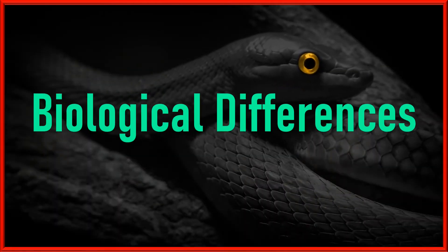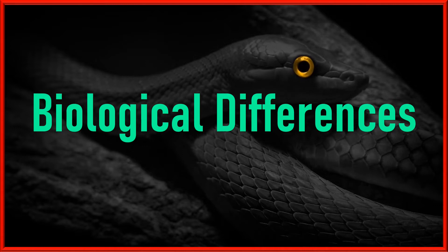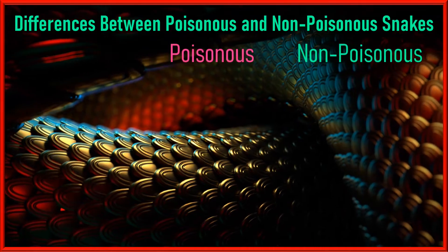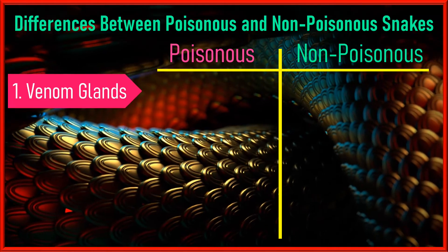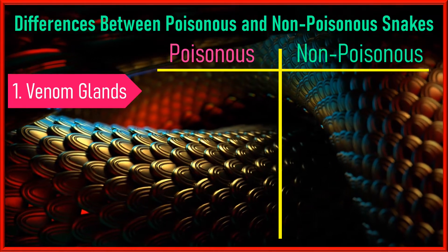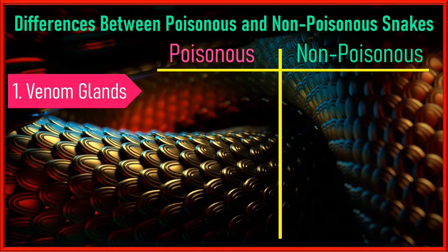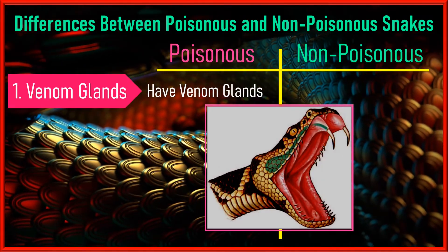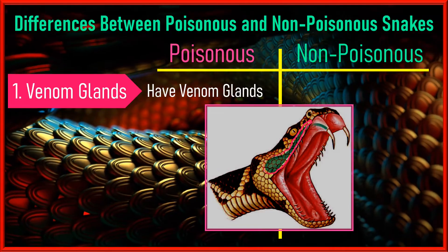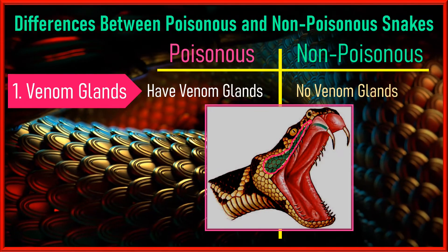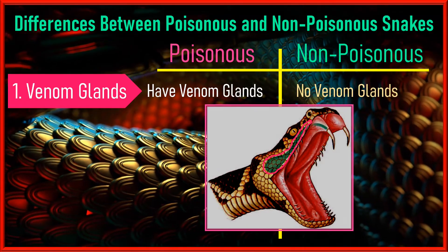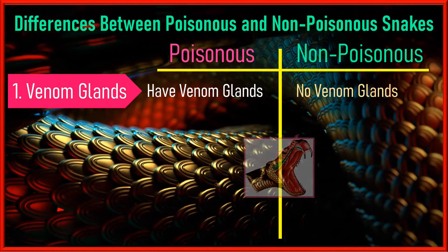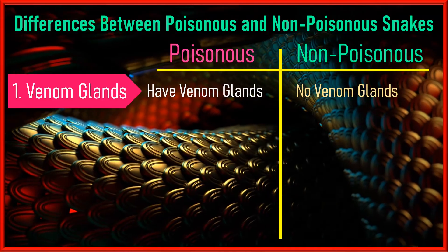Now let's talk about biological differences. First, venom glands: venomous snakes have venom glands as modified salivary glands, while non-venomous snakes do not have venom glands — they have simple salivary glands.